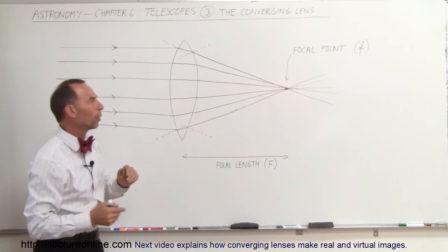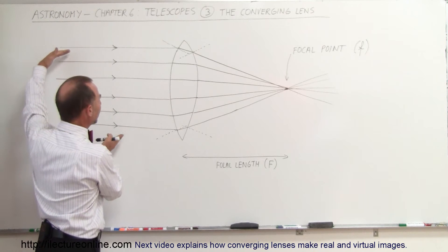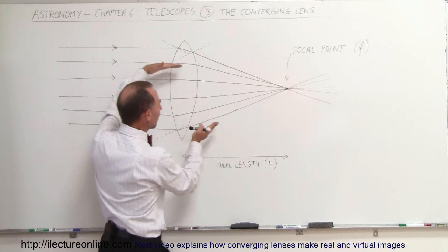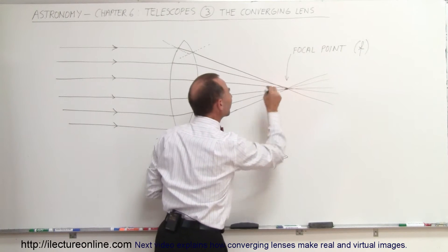Where they come together is called the focal point. All the energy, all the radiation that comes through the lens will be brought together to a single point.